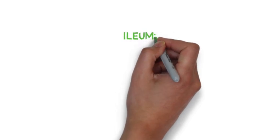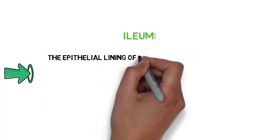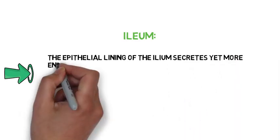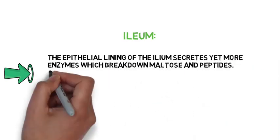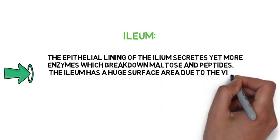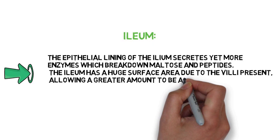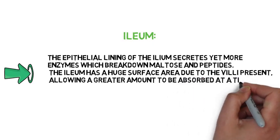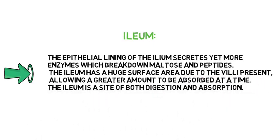The epithelial lining of the ileum secretes yet more enzymes which break down maltose and peptides. The ileum has a huge surface area due to the villi present, allowing a greater amount to be absorbed at a time. The ileum is a site of both digestion and absorption.